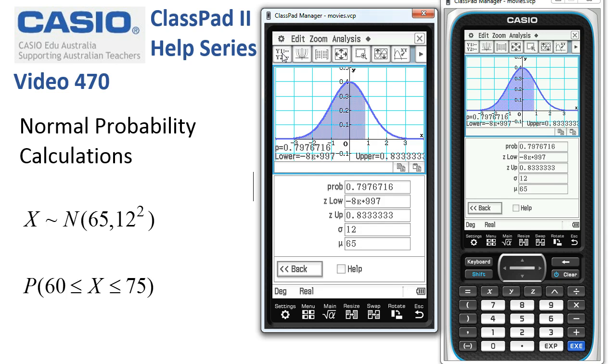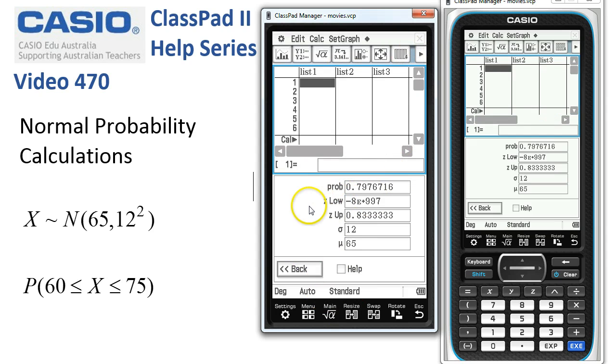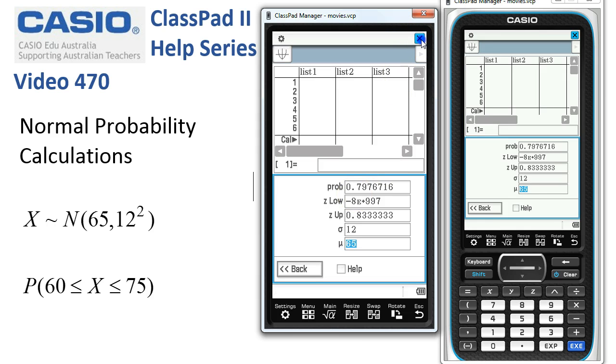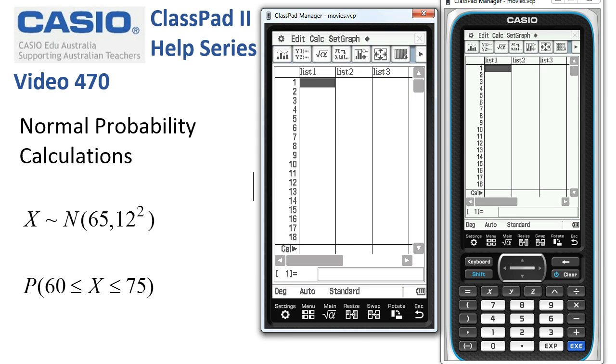ClassPad is saying the probability that we're less than 75 is 0.79767 and the graph is displaying that—that's just over 0.83 of a standard deviation above the mean. To get back, we can close everything and close this window with the cross in the top corner.